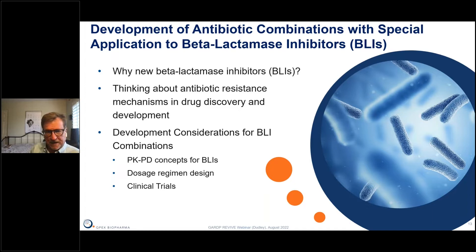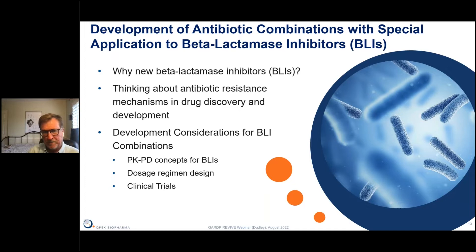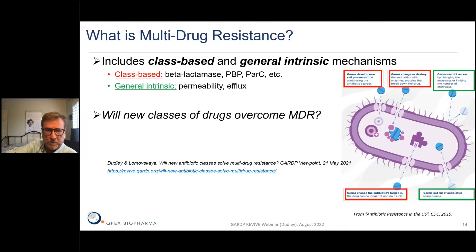I'd like to organize my comments according to this outline. First, focusing on beta-lactamase inhibitors — why do we need new ones? This has been a very active area of antibiotic R&D. Second, we have to think critically about antibiotic resistance mechanisms, addressing not only class-based resistance but also intrinsic resistance mechanisms that can frustrate many efforts. Then I'll touch on important PK-PD concepts and considerations for the inhibitors, how to design dosage regimens, and finally some observations on clinical trials.